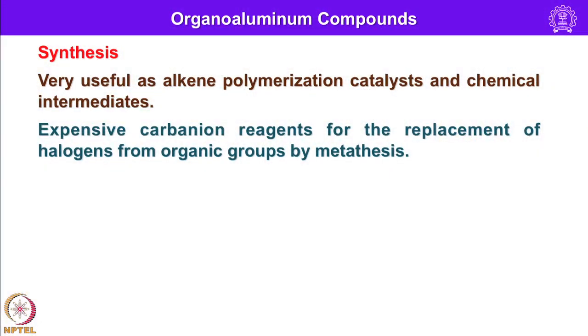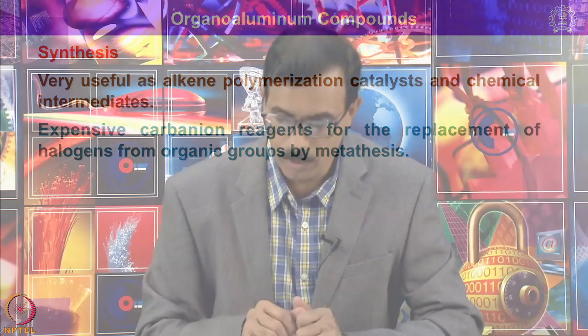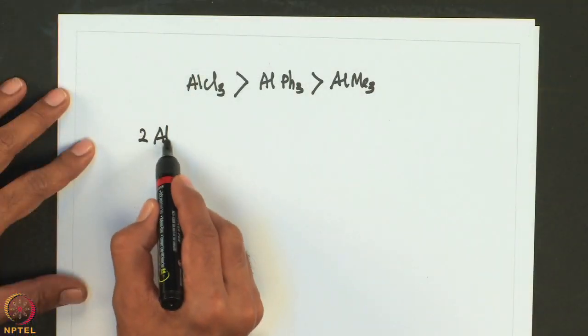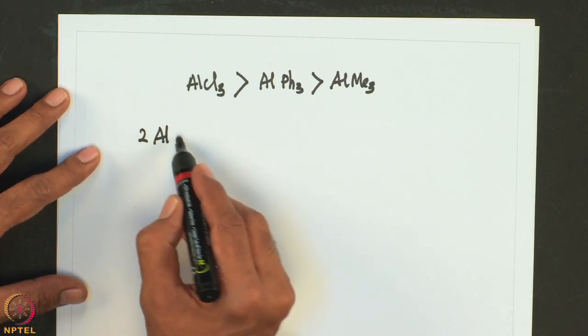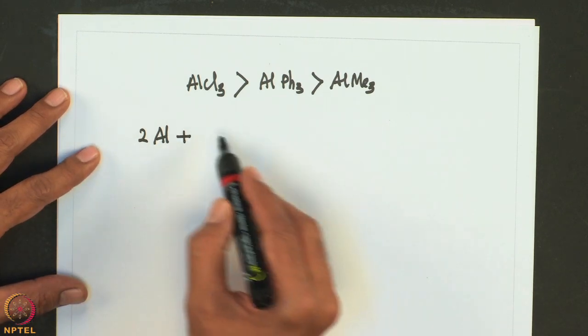Let us look into the synthesis of organoaluminum compounds. They are very useful as alkene polymerization catalysts, chemical intermediates, and as expensive carbonyl reagents for replacement of halogens from organic groups by metathesis. In the laboratory synthesis, dimethyl mercury is reacted directly with aluminum metal.